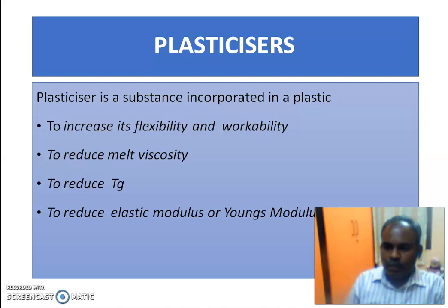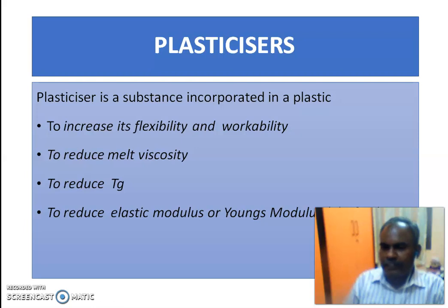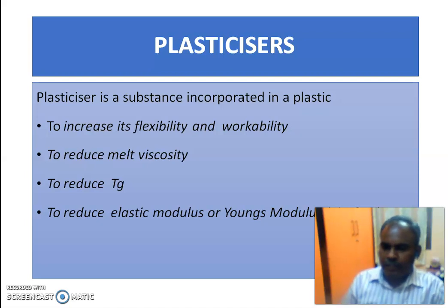Plasticizers are used to reduce the melt viscosity — viscosity refers to the flow behavior of the material. They also reduce Tg, which is the glass transition temperature, and to reduce the elastic modulus or Young's modulus of the polymer.